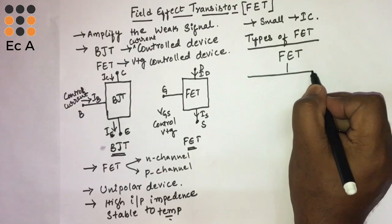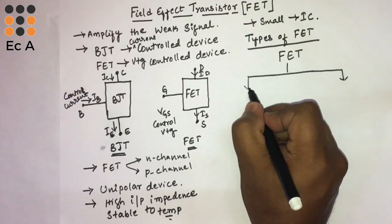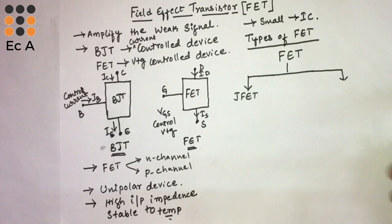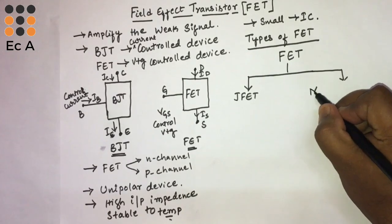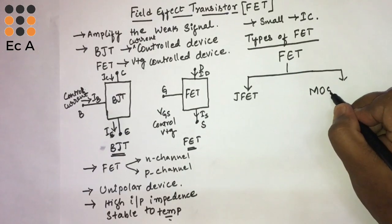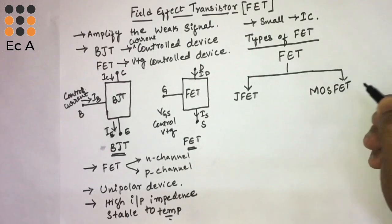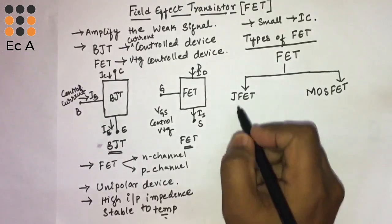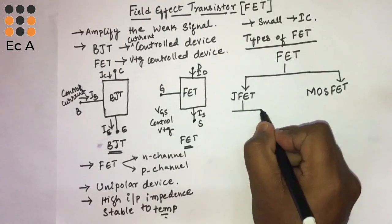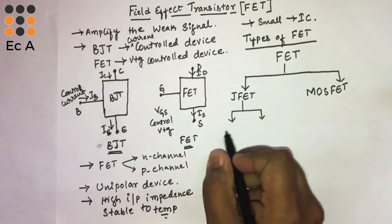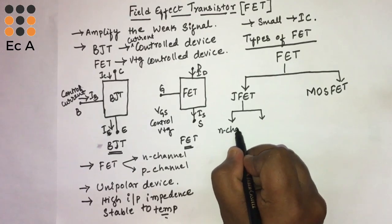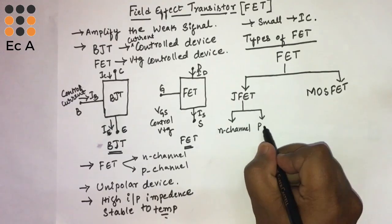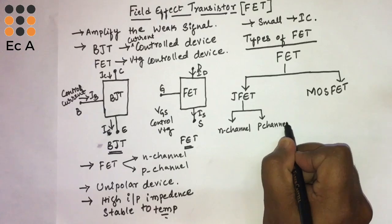Now we will see the types of FET. We can classify FET broadly into two types: the first type is junction field effect transistor — JFET — and the second type is MOSFET, which is metal oxide semiconductor field effect transistor. JFET can again be classified into two types: N-channel JFET and P-channel JFET.